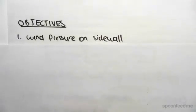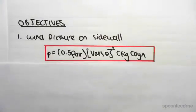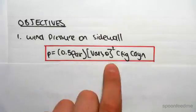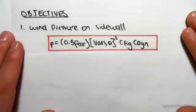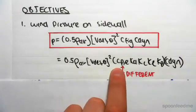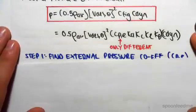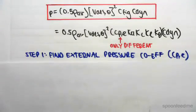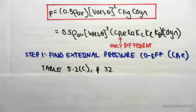Now, the objective of this video is to find the wind pressure on the sidewall. It uses the exact same formula we used for the windward and leeward wall — the only difference is the lowercase Cpe pressure coefficient. So Step 1 is finding that pressure coefficient, C subscript p comma e.